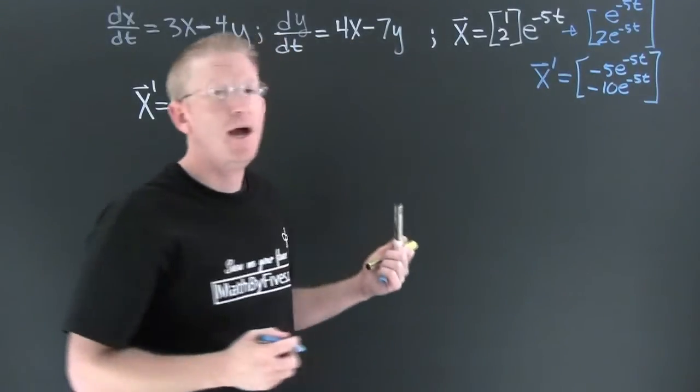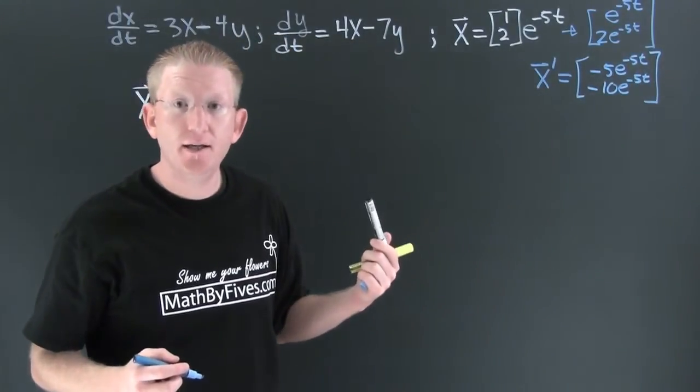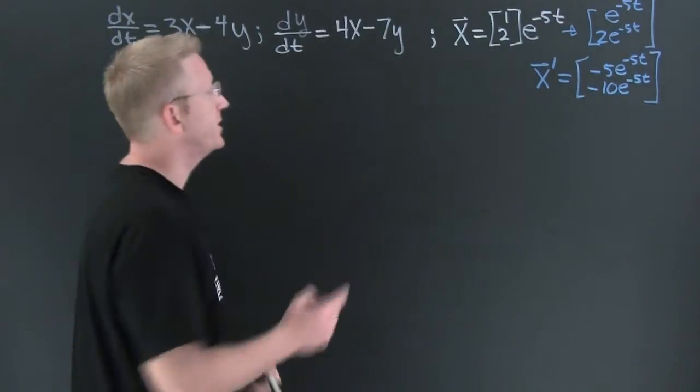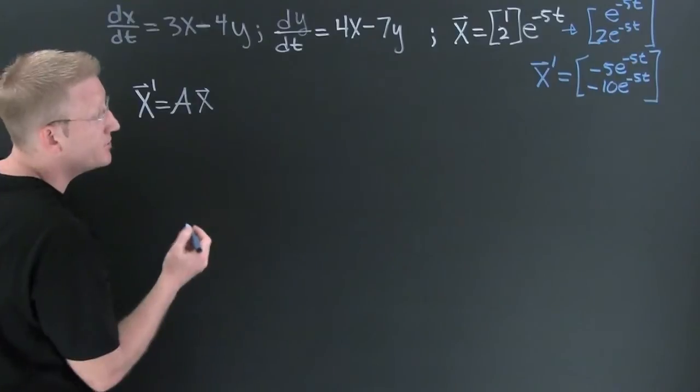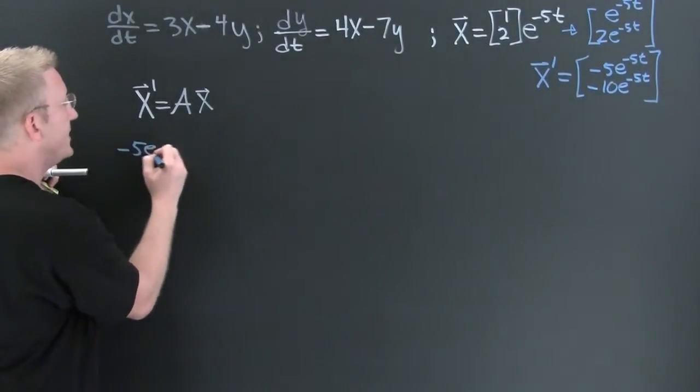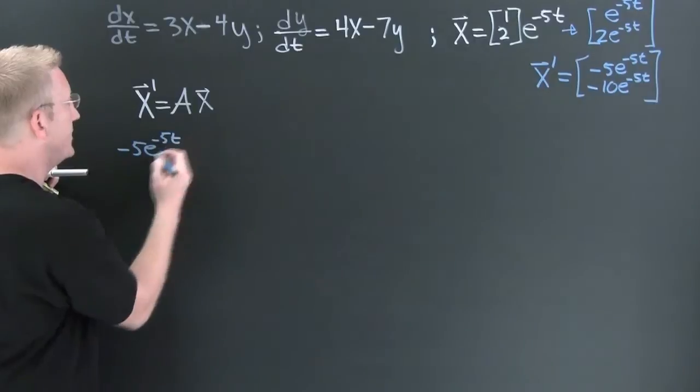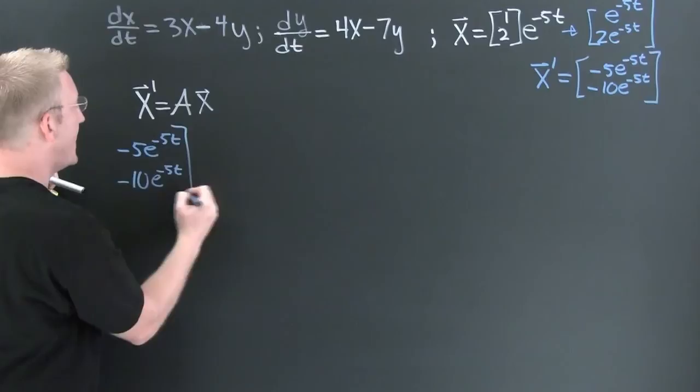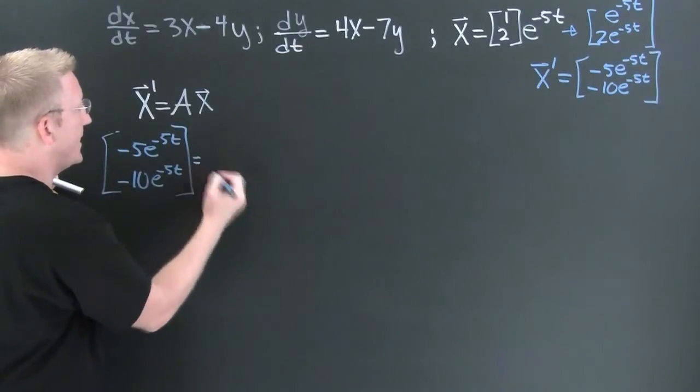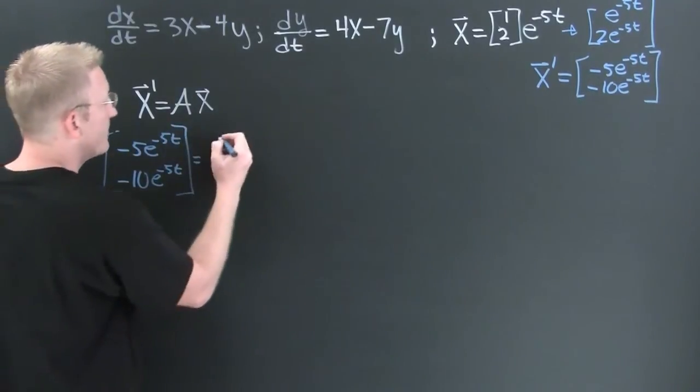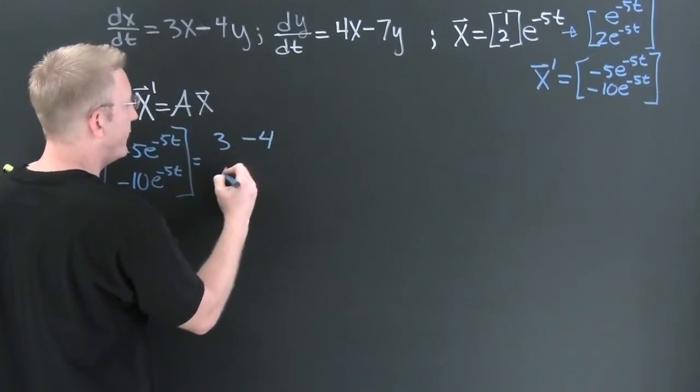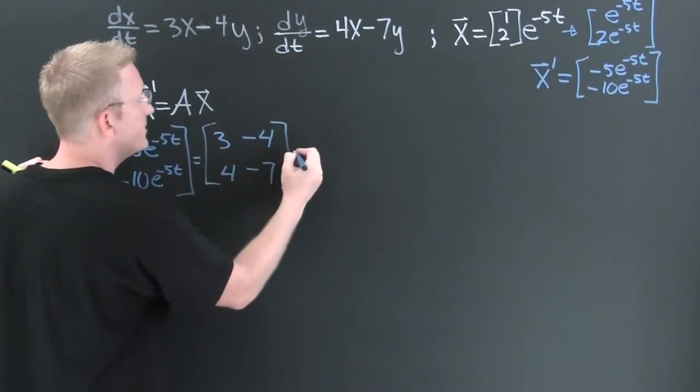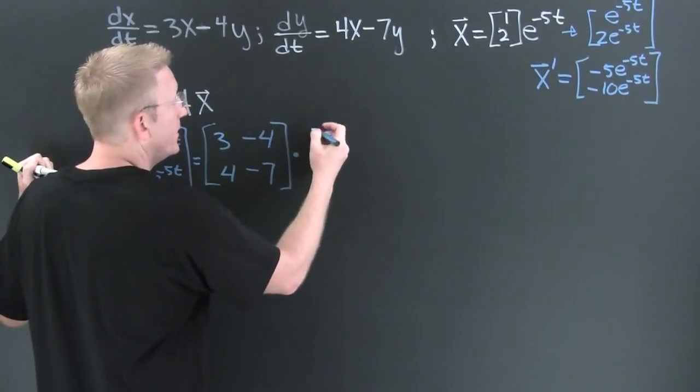So now what am I going to do? I'm going to plug it in, plug it in. It's going to make the whole system smell fresh. Yes. So now I need to check it. Is minus 5e to the minus 5t, minus 10e to the minus 5t, is that the same as my coefficient matrix, 3 minus 4, 4 minus 7, times my suggested solution.